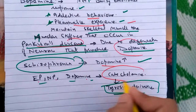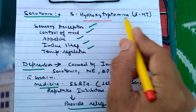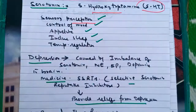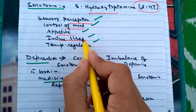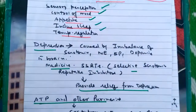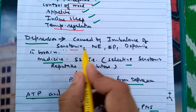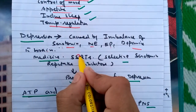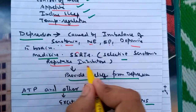Epinephrine, norepinephrine, and dopamine are catecholamines and are tyrosine derivatives. Serotonin, also called 5-hydroxytryptamine (5-HT), helps in sensory perception and controls mood, appetite, sleep induction, and temperature regulation. In depression, there is an imbalance in the secretion of serotonin, epinephrine, norepinephrine, and dopamine in the brain. The medicine used is SSRI — selective serotonin reuptake inhibitor — which provides relief from depression.